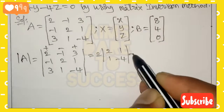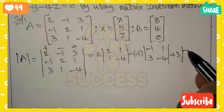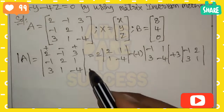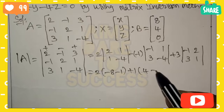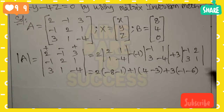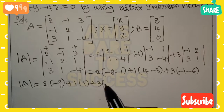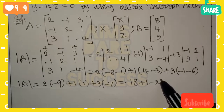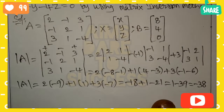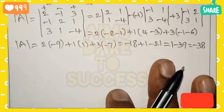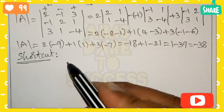Expanding along the first row: 2 times (2 times minus 4 minus 1 times 1), minus (minus 1) times (minus 1 times minus 4 minus 1 times 3), plus 3 times (minus 1 times 1 minus 2 times 3). This gives 2 times (minus 8 minus 1), plus 1 times (4 minus 3), plus 3 times (minus 1 minus 6), which equals 2 times (minus 9) plus 1 times (1) plus 3 times (minus 7) = minus 18 plus 1 minus 21 = minus 38. So det(A) = minus 38, which is not equal to 0, so we can continue with the matrix inversion method.